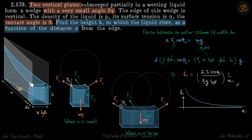We have two vertical planes and the angle between them is given as delta phi. These planes are dipped into water and we need to find, at a distance x, what will be the height h of the water column. We take an element at a distance x with width dx.